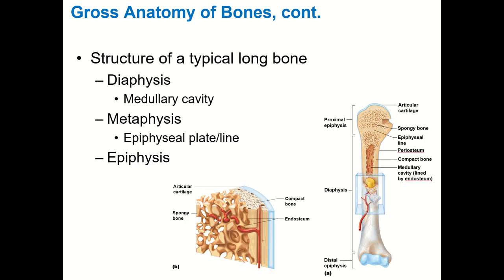The epiphyses are the rounded ends of the long bone — each long bone has two (proximal and distal). On the humerus, the proximal epiphysis includes the humeral head and the greater and lesser tubercles — basically everything from the surgical neck up. The distal epiphysis includes the condyles: the trochlea, capitulum, and medial and lateral epicondyles.